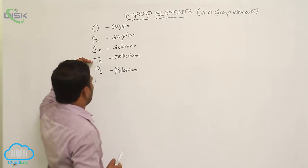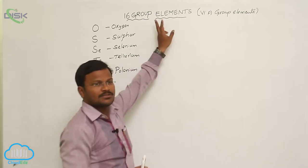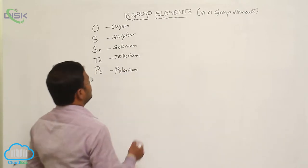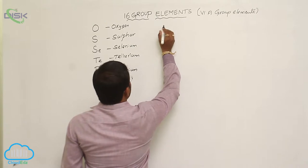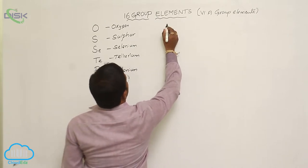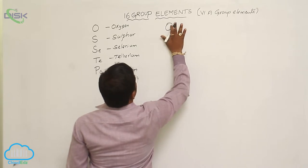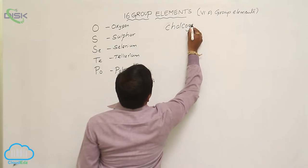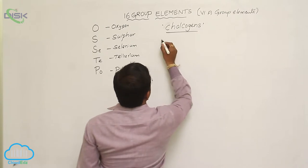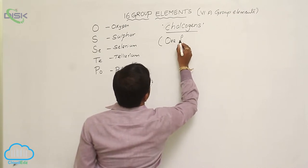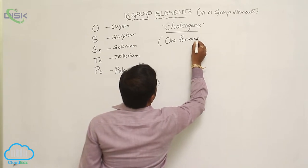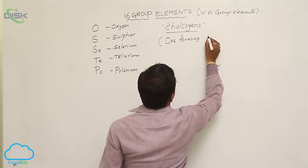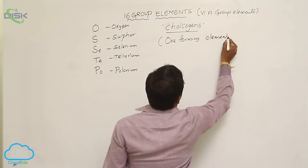Oxygen, sulfur, selenium, tellurium, and polonium atoms of the periodic table belong to the 6th group, 16th group, or 6th A group family. Sometimes, the 16th group elements are also considered as chalcogens. Chalcogens means ore-forming elements.